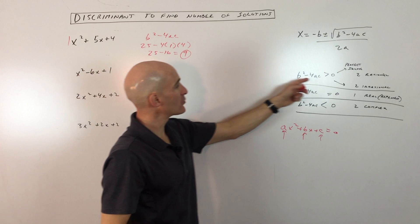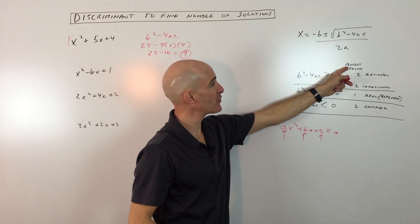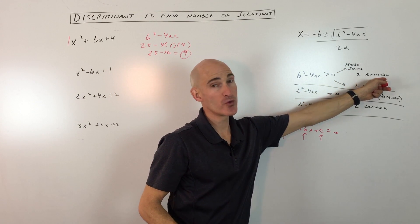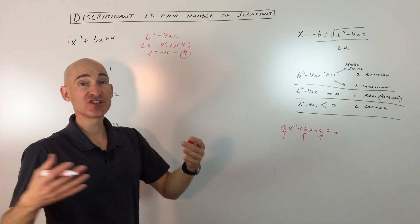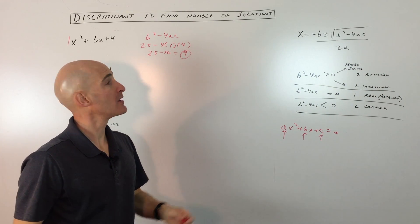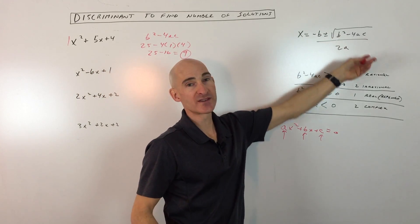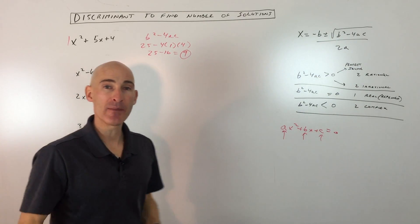You can see that 9 is greater than zero, it's positive, and it's a perfect square, so we get two real rational solutions. So now we're not actually solving for what the solutions are at this point. We're just figuring out what's the type of solution and how many.